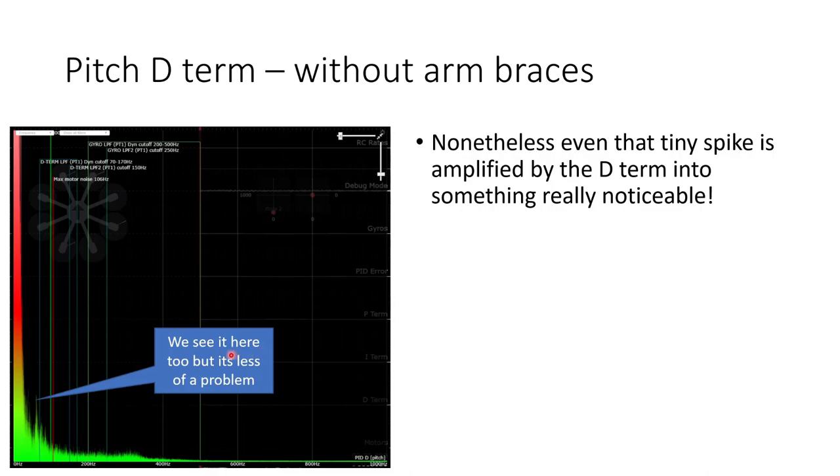If we look now at the D term we can see that the D term amplifies that tiny peak that we saw in the gyro scaled log to be quite a significant peak. And we can really notice this now and although it's nowhere near as bad as what we saw on the roll axis it could still potentially cause D term oscillations, hot motors, and limit the maximum D gain that you can put on the drone. So it's something we would like to address if we possibly can.